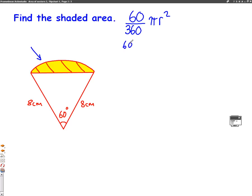So we're going to do 60 out of 360 times pi, which is 3.14 times the radius, which you can see in this question is 8 centimeters. So the radius is 8, but we've got to square it. So we type this on our calculator. So we do 60 divided by 360 times 3.14 times 8 squared.